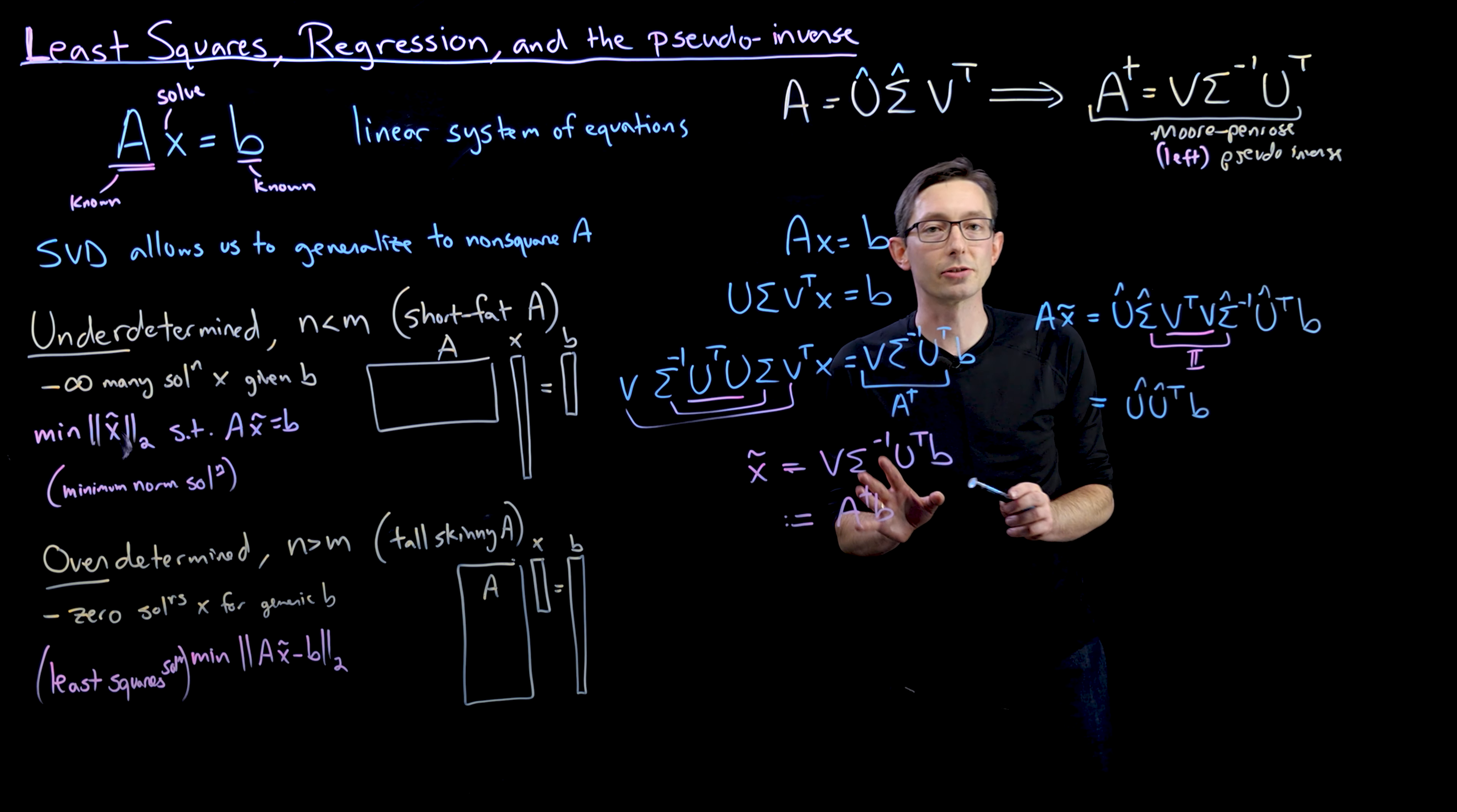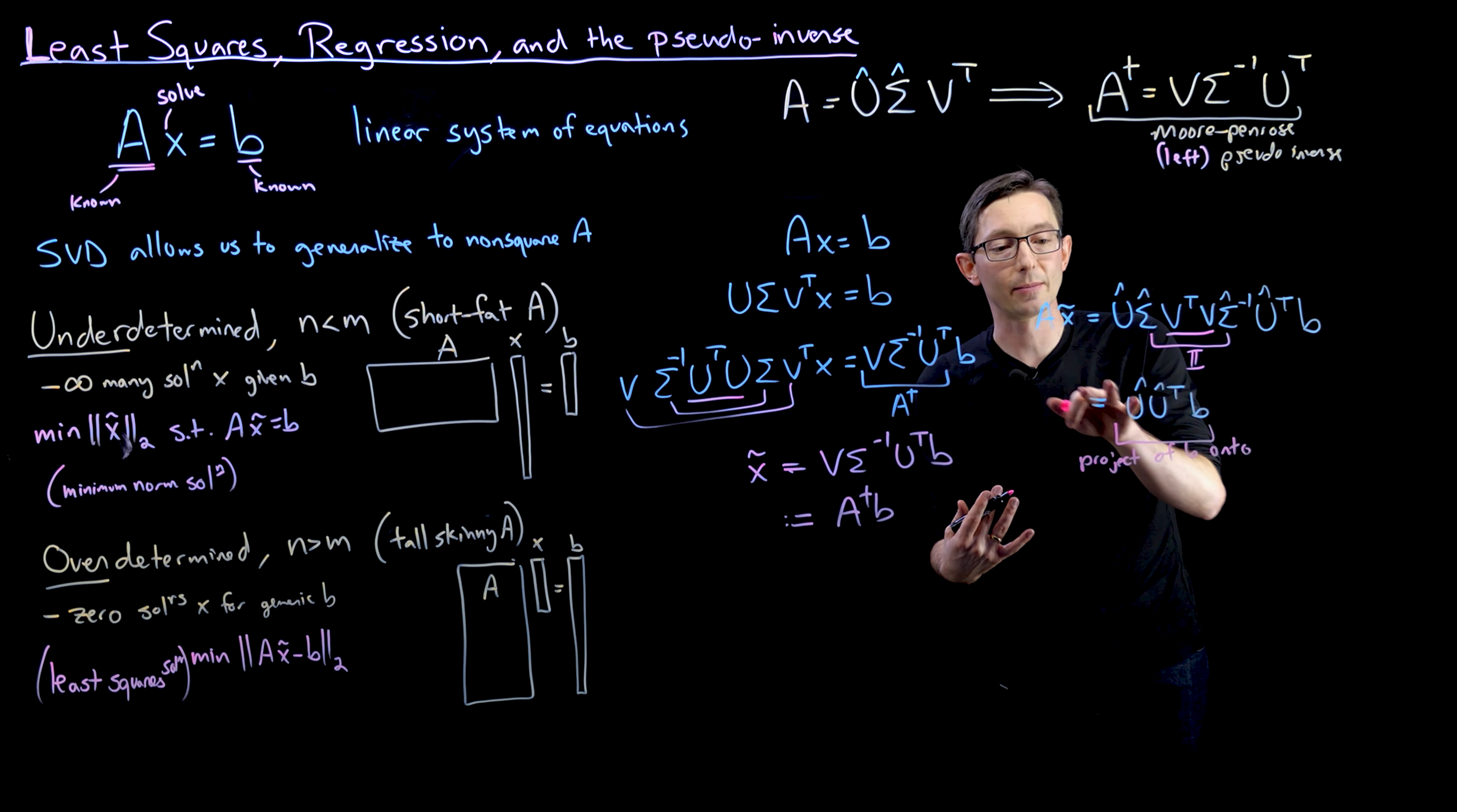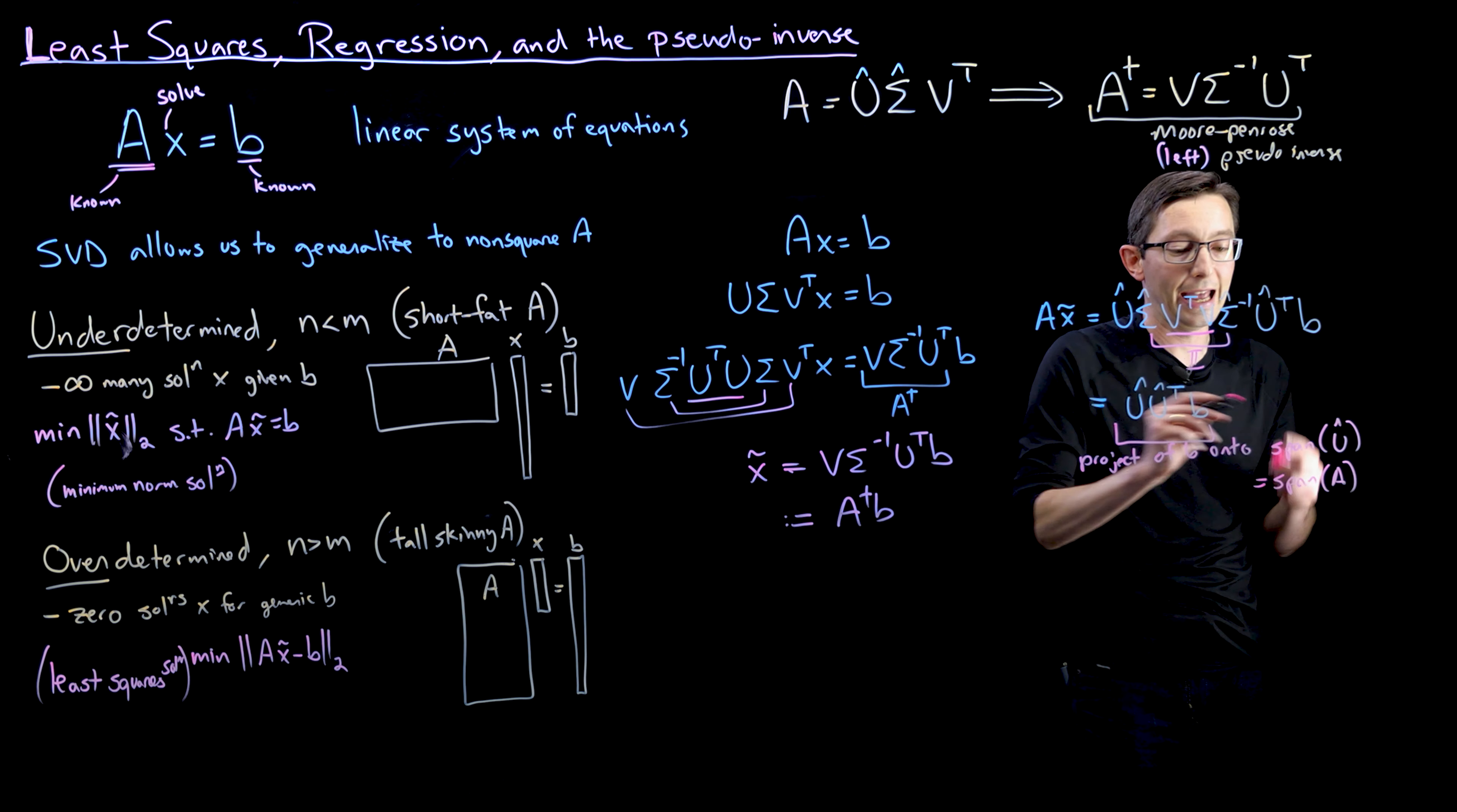Okay, so here's where it gets interesting. U U transpose B is the projection of B onto the subspace spanned by the columns of U, onto essentially the span of the columns of U. Now these columns of U also span the matrix A. So this is equal to the span of the columns of the matrix A.